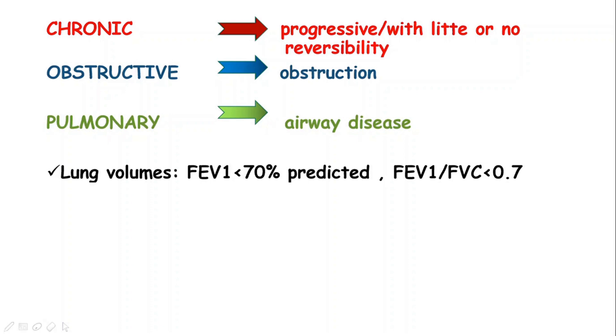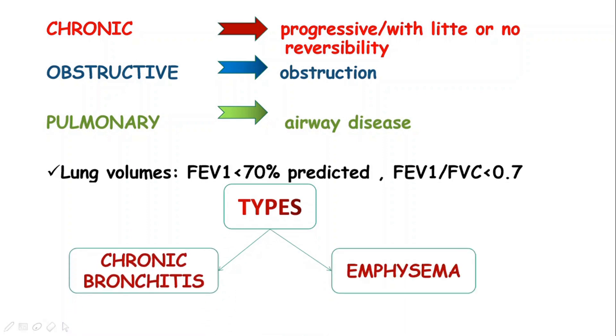In British guidelines, the 70% is replaced by 80%. The two types of COPD are chronic bronchitis and emphysema.